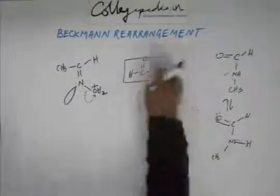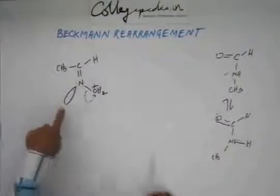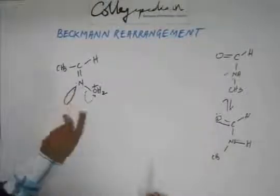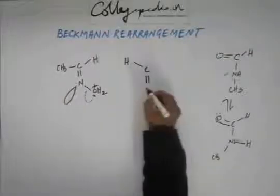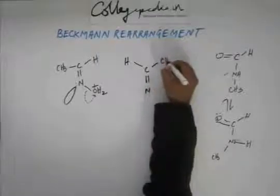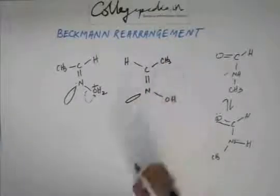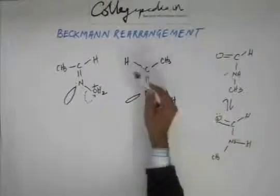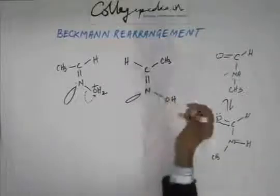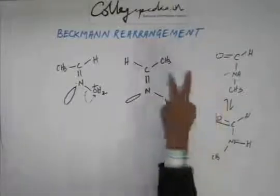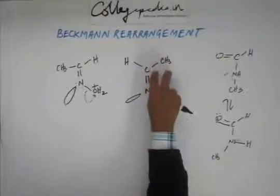Now in this case, we considered that methyl is parallel to the orbital. There could also be a situation when hydrogen is parallel to the orbital of nitrogen. In that case, hydrogen will migrate to nitrogen, a positive charge will develop on this carbon, and then oxygen of water will attack this carbon. A C-OH will develop, then tautomerization gives C double bond O.